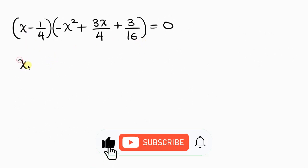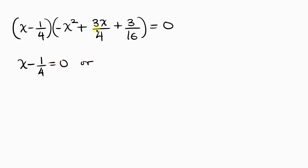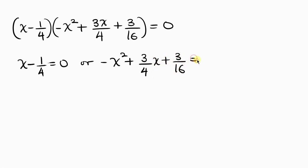So we have two cases. The first case is x minus 1/4 equal to 0, or the second case is negative x squared plus 3x/4 plus 3/16 equal to 0. For our first case, moving negative 1/4 to the right-hand side gives x equals 1/4. That is our first solution.